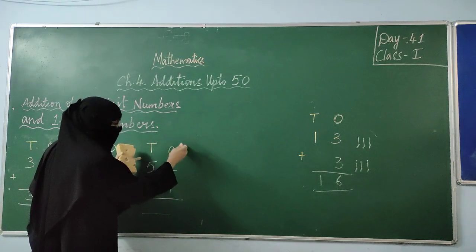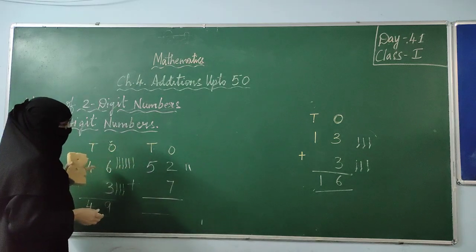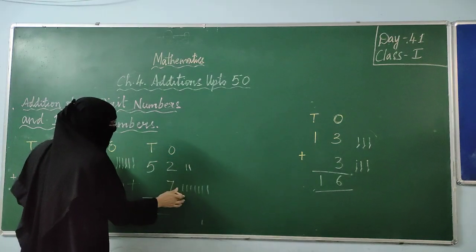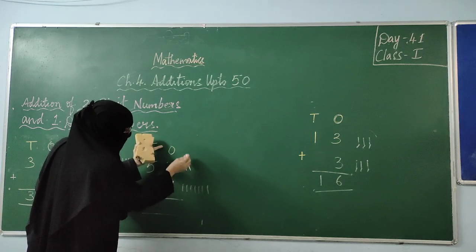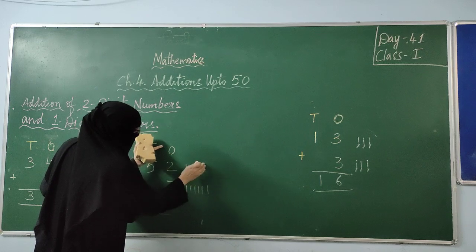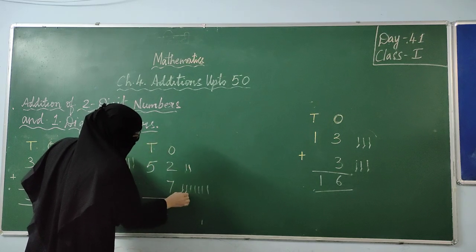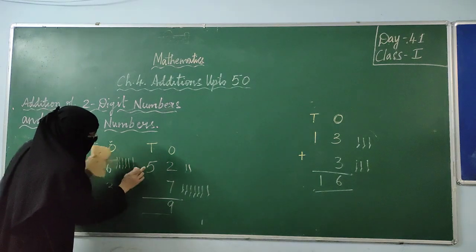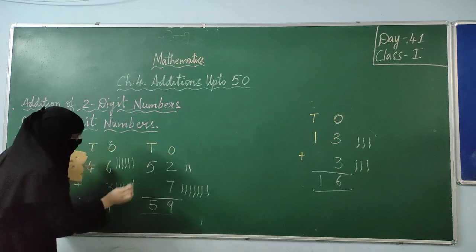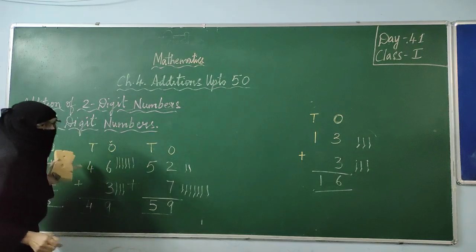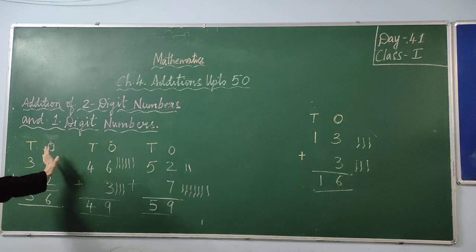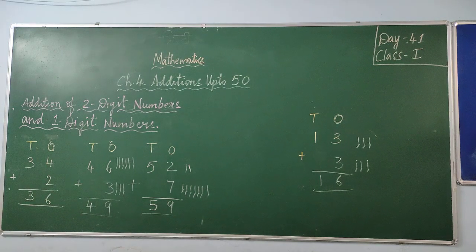Now one more example. I am going to start from the right side. The ones digit is 2. The next number in ones position: 1, 2, 3, 4, 5, 6, 7. I am counting the numbers. Now I have to do the total of these two ones digits — 2 plus 7 gives me 9. Then I bring down the tens digit. And then I am going to add 5 to it.